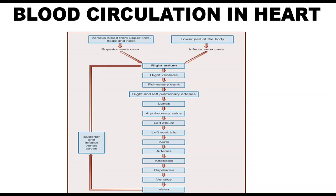To summarize: deoxygenated blood enters the right atrium from body parts through the superior vena cava. From the right atrium blood enters the right ventricle through the tricuspid valve. From there, blood enters the lungs through the pulmonary tract, which consists of the right and left pulmonary arteries. Oxygenated blood then enters the left atrium through the four pulmonary veins, then passes to the left ventricle through the bicuspid valve, and finally enters the aorta, which distributes blood to all body parts through arteries and capillaries.